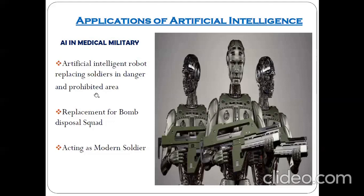Robot soldiers can work in prohibited areas or dangerous areas without any difficulty. In the Galwan area incident, soldiers from both sides died — not just because of fighting, but because of falling in the hilly area and hitting their heads on rocks. With robots, these kinds of things can be easily avoided.